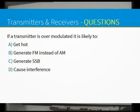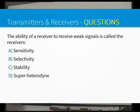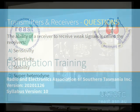If a transmitter is over-modulated, it is likely to cause interference — that's the key safety concern. The ability for a receiver to receive really weak signals is called sensitivity. Super heterodyne is actually a type of receiver — just so you know, that's a bit of a trick answer in the exam.